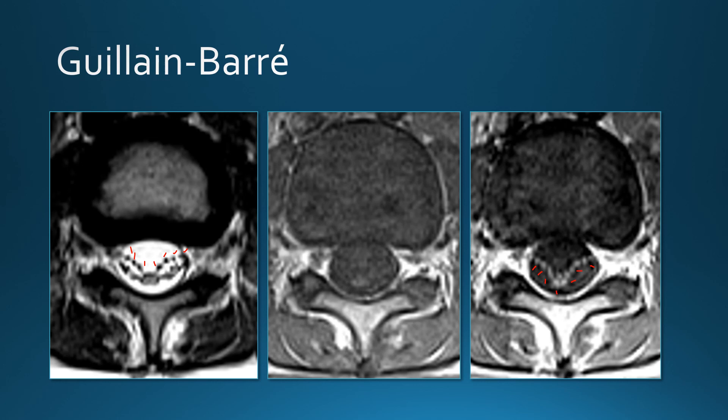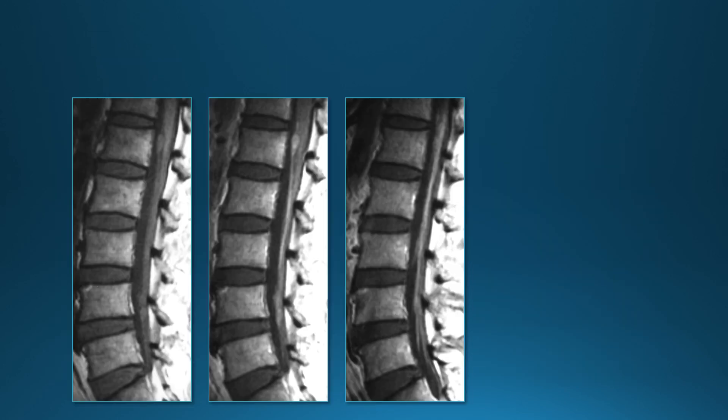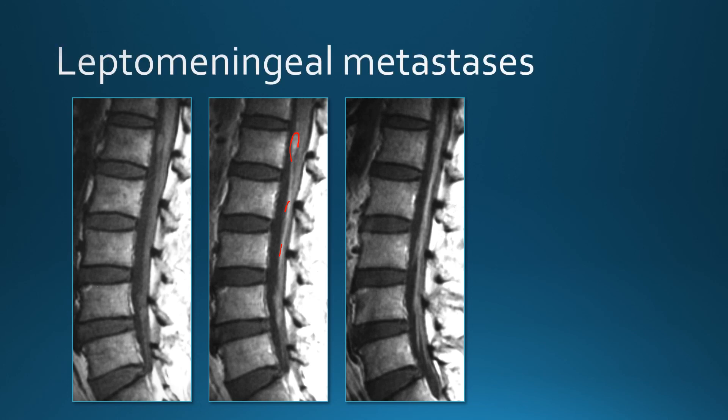The more chronic form, CIDP, is much less common and we don't image it very often, but you can see diffuse nerve root thickening. Another patient shows leptomeningeal enhancement with both linear and nodular appearance — the nodular component suggests tumor, and this was a patient with leptomeningeal metastases.